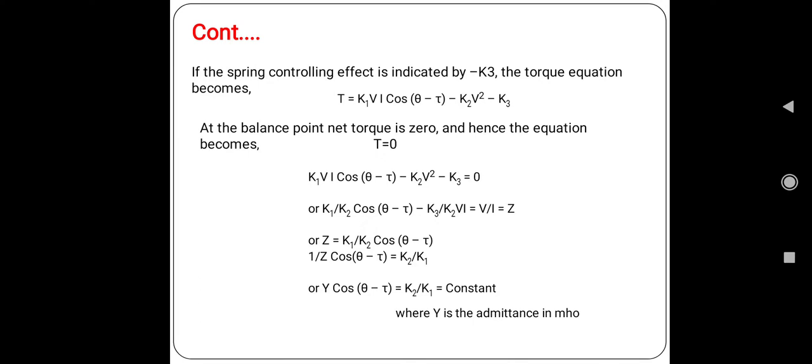Where θ and τ are defined as positive when current lags behind the voltage. At the equilibrium point or balance point, we all know that the net torque is equal to zero. Hence this equation becomes K1·V·I·cos(θ - τ) minus K2·V² minus K3 equals zero. After mathematical simplification, we find that Z equals K1/K2·cos(θ - τ).